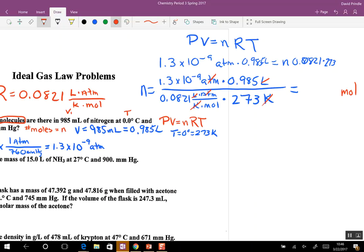And if you do the math, 1.3 to the negative ninth times 0.985 divided by all the bottom, I get 5.7 times 10 to the negative tenth moles. How do I get from moles to molecules? How many molecules in a mole? Avogadro's number, 6.02 times 10 to the 23rd.